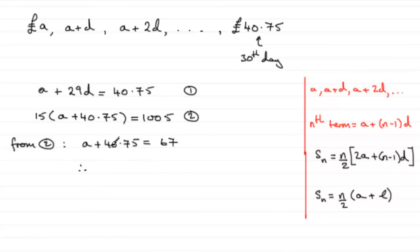So to get A, all I need to do now is subtract 40.75 from both sides. So 67 minus 40.75 gives you 26.25. So there's A, okay?